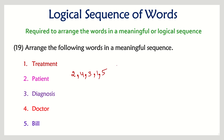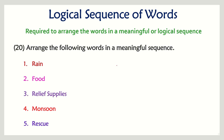Last question: rain, flood, relief supplies, monsoon, and rescue. A monsoon season causes rain, and when the rain is heavy it causes a flood. The flood affects people, so we rescue them. After rescuing, we provide relief supplies such as food. I hope you all understood the video — look for more videos from this channel, thanks for watching.